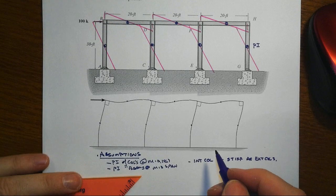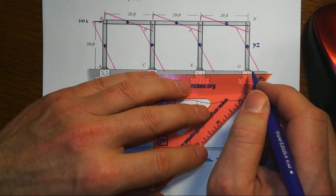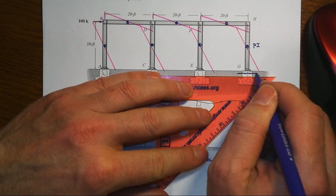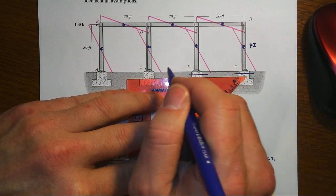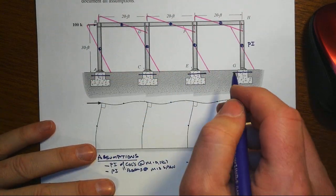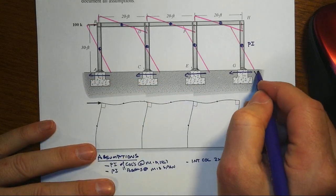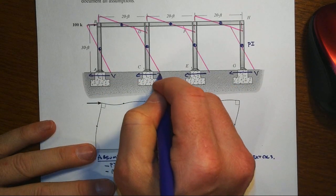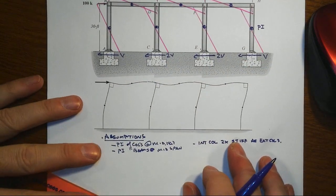Alright, and what that's going to do for us is enable us to say that we think that the shear that develops at the base of these columns is going to be proportional to this relative stiffness, right, and so that would be V on the outside and 2V on the inside. Alright, so with that assumption,